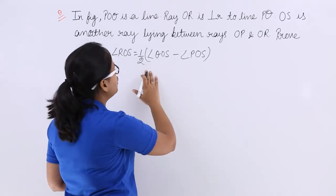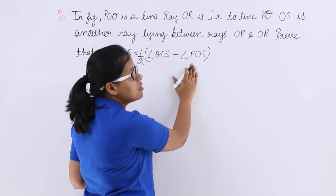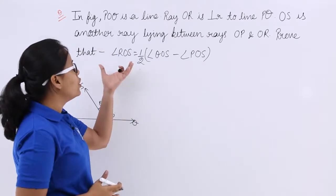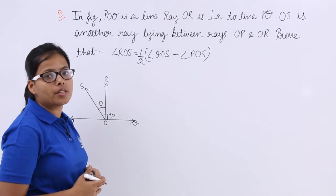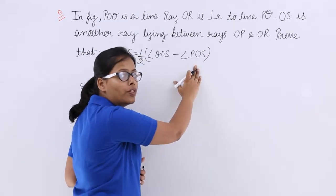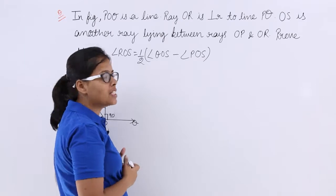So now what you need to prove? 1 by 2, it should be equal to angle QOS minus angle POS. So you have to prove this, half of this is equal to ROS. To prove this, we will take the right-hand side and then we will prove that this right-hand side is equal to left-hand side.